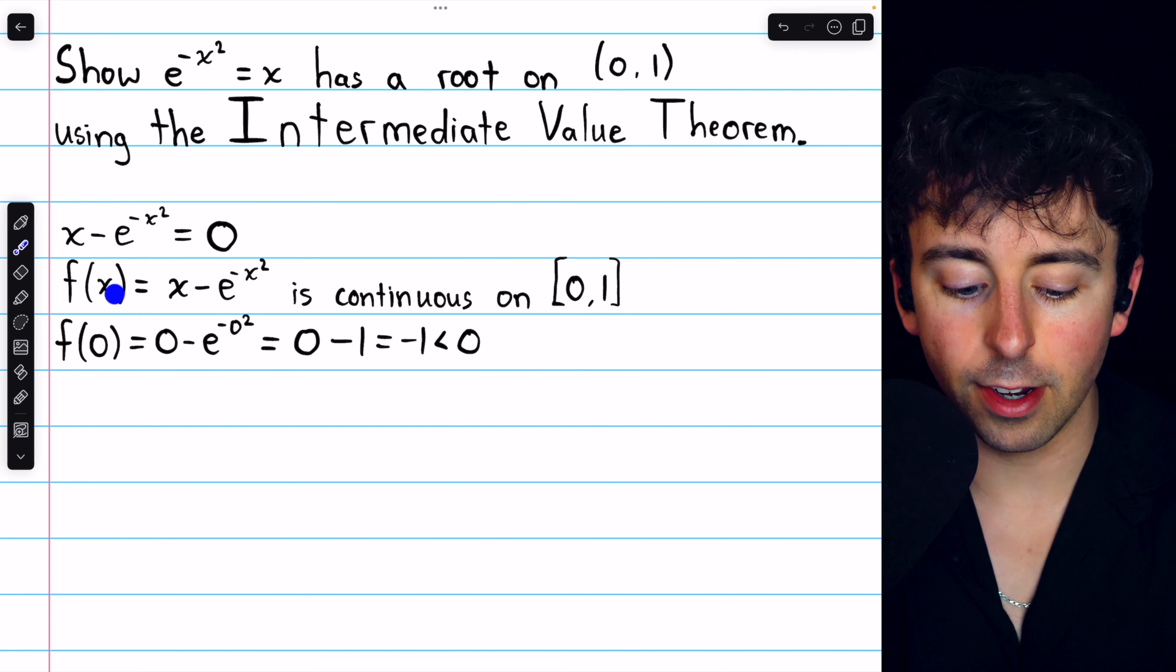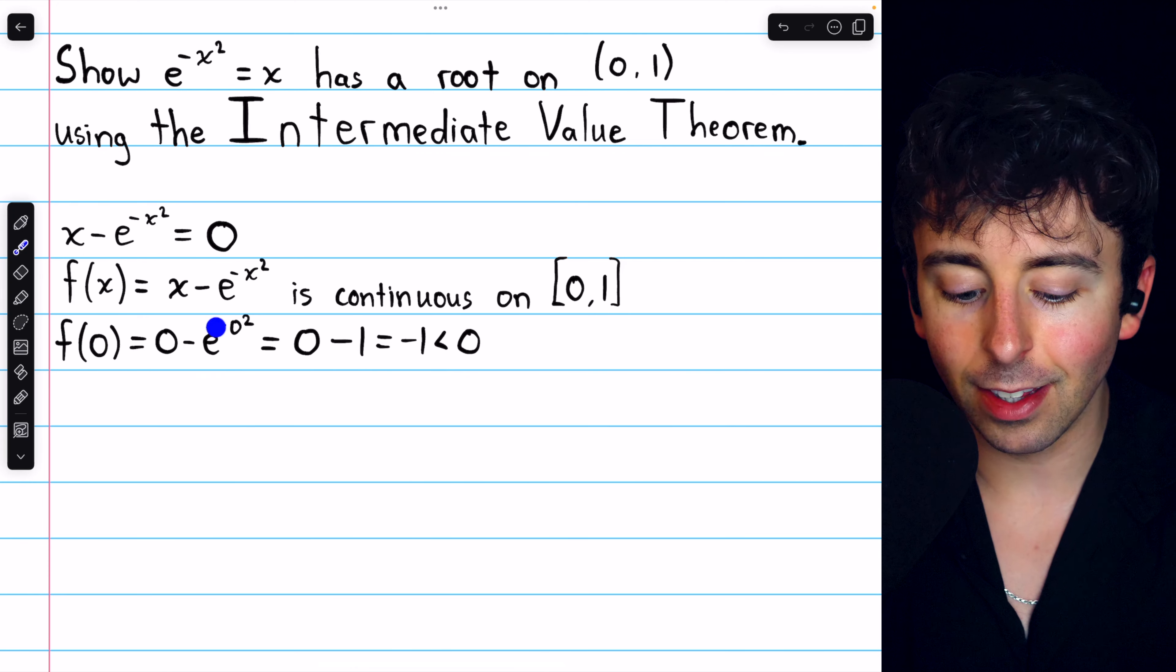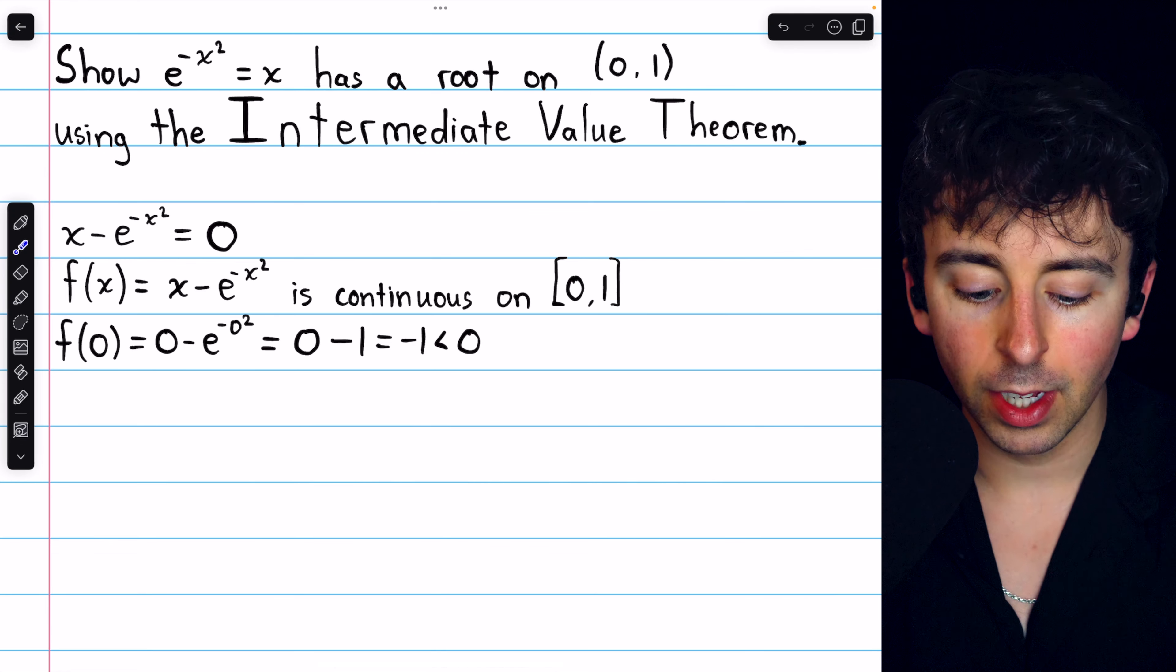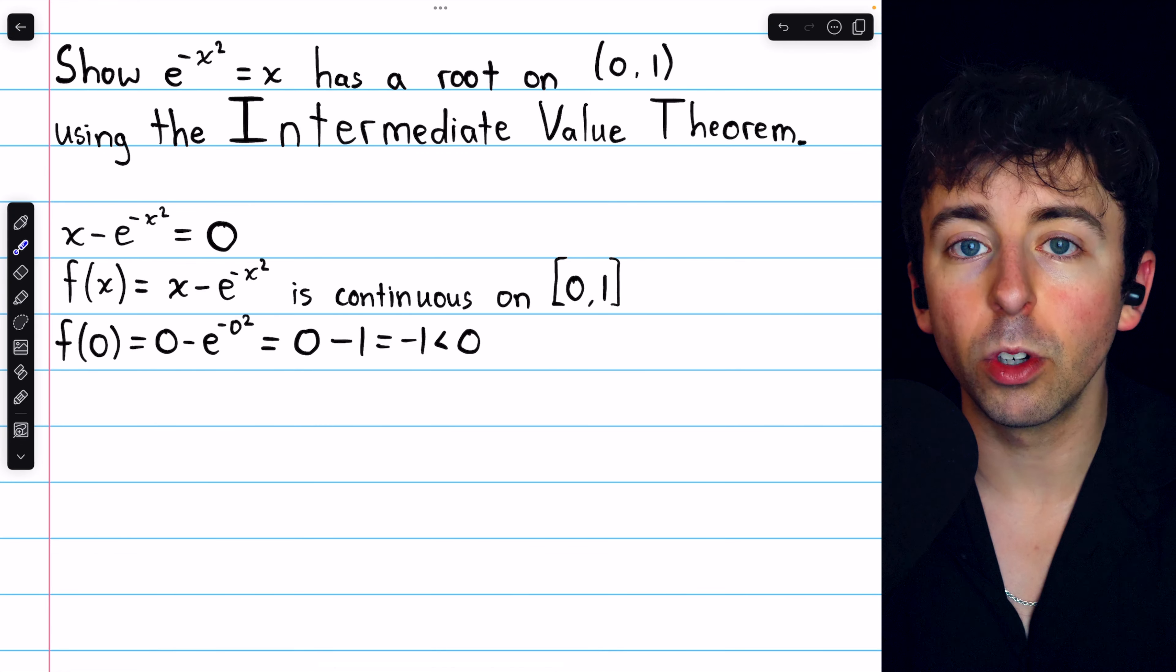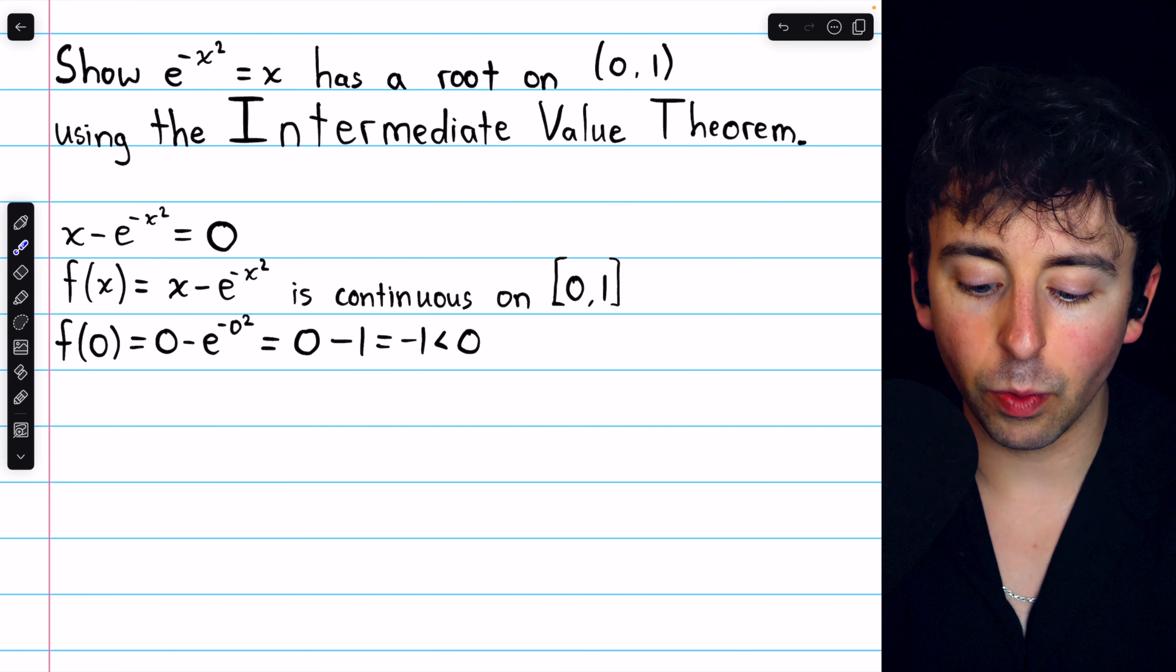Plugging the left endpoint 0 into our function, we have 0 minus e to the negative 0 squared. This is just e to the 0, which is 1. So this is 0 minus 1, which is negative 1.